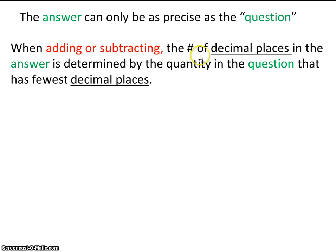When adding or subtracting, the number of decimal places in the answer is determined by the quantity in the question that has the fewest decimal places. Now once again, I know this is confusing, but an example will enlighten us.